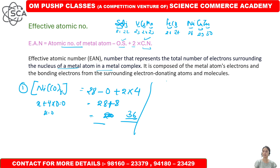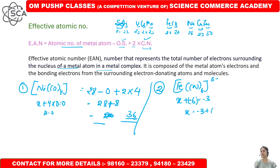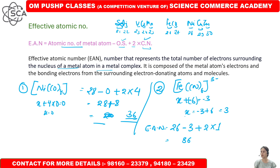Next, let's calculate the EAN for Fe(CN)6 with a 3 negative charge. First, calculate the oxidation state: x + 6×(−1) = −3, so x = −3 + 3 = 3... actually x − 6 = −3, so x = 3. CN has one donor site so coordination number is 6. EAN = 26 − 3 + 2×6 = 23 + 12 = 35.